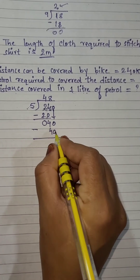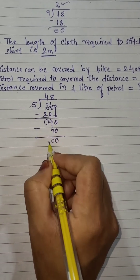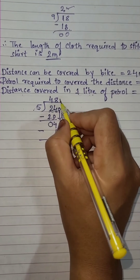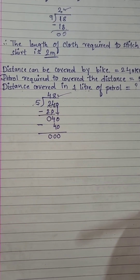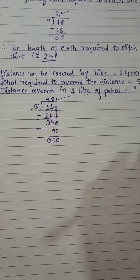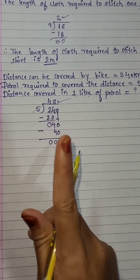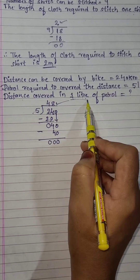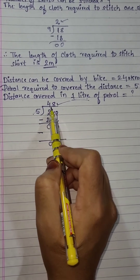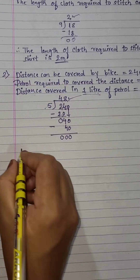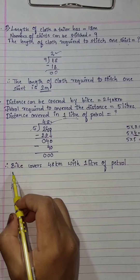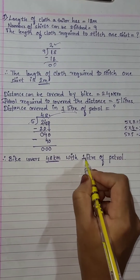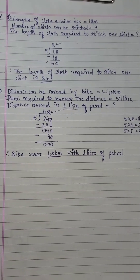Subtract: 0 minus 0 is 0, 4 minus 4 is 0. So your answer is 48. Therefore the bike covers 48 kilometers with 1 liter of petrol.